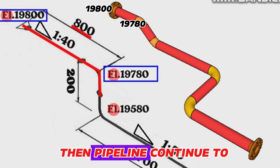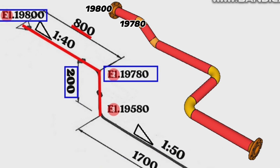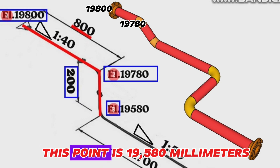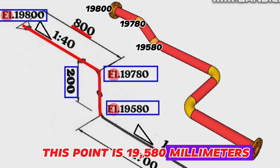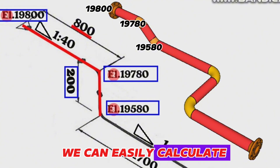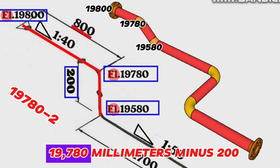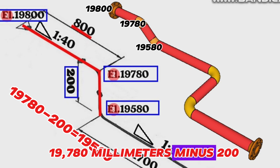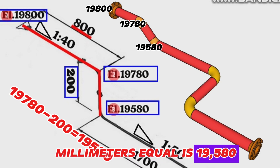Then the pipeline continues downward for a length of 200 millimeters. The height elevation of this point is 19,580 millimeters. We can easily verify this: 19,780 millimeters minus 200 millimeters equals 19,580 millimeters.